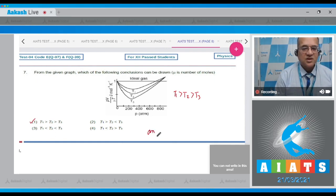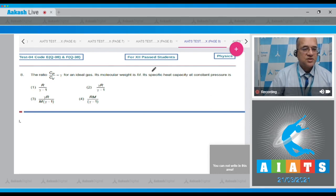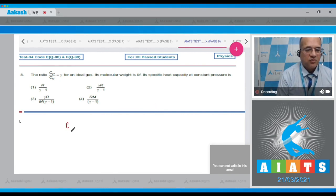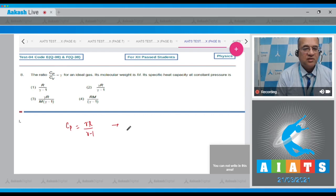Question number 8: The ratio Cp/Cv is gamma for an ideal gas. Then its molar weight is M. Its specific heat at constant pressure? Dear student, molar specific heat is equal to gamma R divided by gamma minus 1.